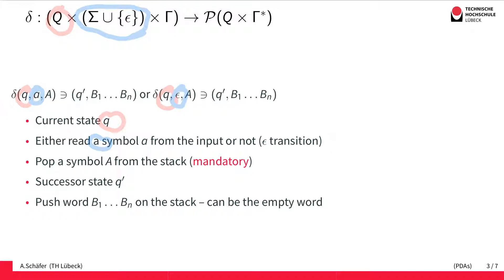The third part of the definition is that we actually read something from the stack — exactly one letter. So we take one symbol from the stack and this one is popped. Importantly, this pop operation is mandatory; there's no star or epsilon option here. We have to take one symbol; this cannot be the empty word. And this function yields a set because we have non-deterministic PDAs, so there might be more than one possible successor.